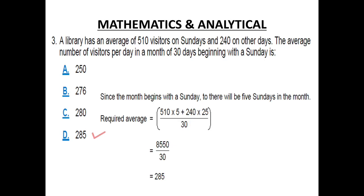Since the month begins with a Sunday, so there will be 5 Sundays in one month. Now required average is 510 into 5. Why? Because we mentioned that there are 510 visitors on Sundays. And how many Sundays are there? There are 5 Sundays. Plus 240 into 25. From where do we get 25? There are 30 days in the month. Out of 30 days, 5 are Sundays.